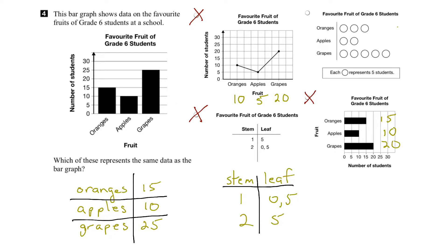Let's look at the last option. We're given that these circles represent five students each. For oranges, the number of students would be five plus five plus five, or fifteen. For apples, it would be five plus five, which gives us ten. And for grapes, we'd have five, five, five, five, and five — that's five, ten, fifteen, twenty, twenty-five. If we compare these values to our data, we see that they're identical. Therefore, this is an accurate representation of the data.